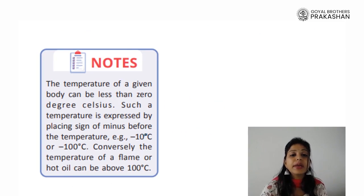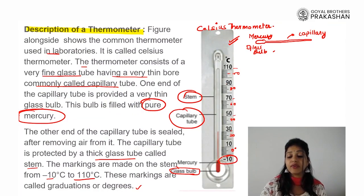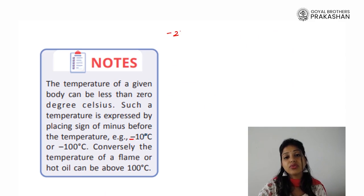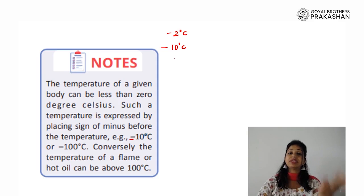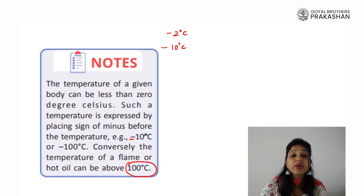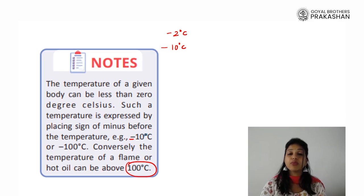The temperature of a given body can be less than 0 degrees Celsius — such a temperature is expressed by placing a minus sign in front. As we saw on the scale, the temperature started at minus degrees, meaning it is below 0 degrees. Minus 2 degrees means it is 2 degrees below 0, and minus 10 degrees Celsius means it is 10 degrees below 0. Conversely, the temperature of a flame or hot oil can be above 100 degrees Celsius. We know water boils at 100 degrees Celsius, but temperatures above that definitely exist — for example, the temperature of a flame or hot oil will be much more than 100 degrees Celsius.